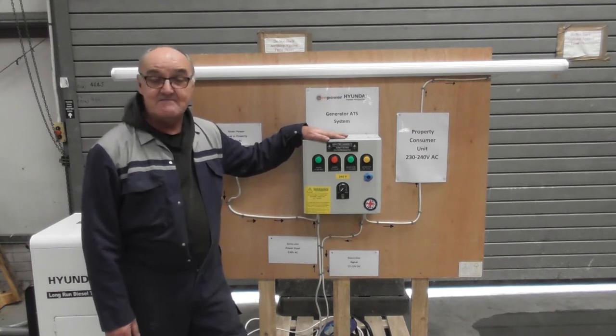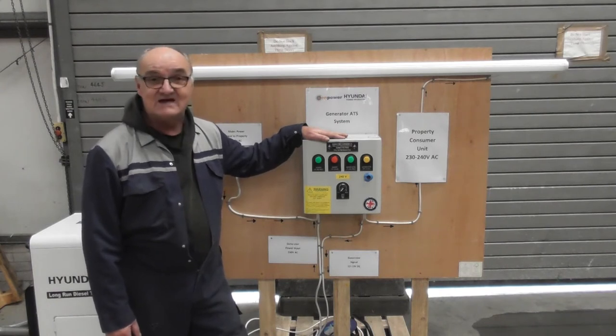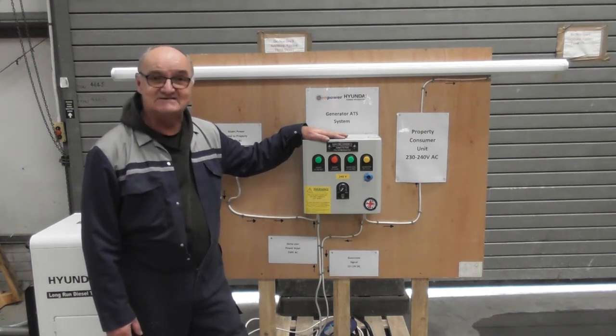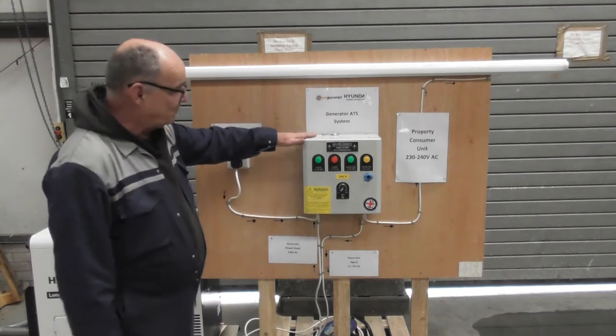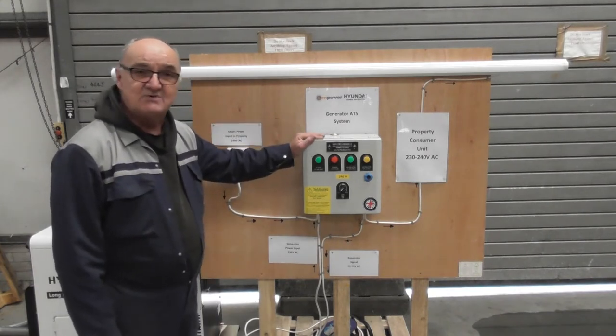It's also known as an AMF which is automatic mains failure or sometimes it's called an MTS which is a mains transfer system. So basically what it does is controls the power supply to the property in the event of a power cut.